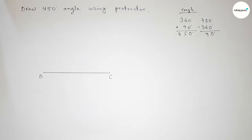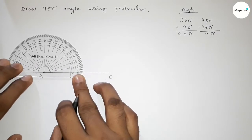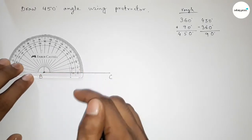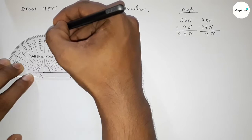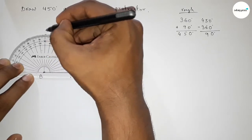First drawing here a 90 degree angle by using the protractor. So this is a 90 degree angle.